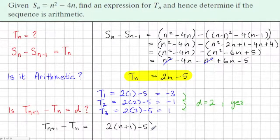So term n plus 1 is 2 times n plus 1 minus 5. And from this we're going to take away term n, which is 2n minus 5. And multiplying this out we have 2n plus 2 minus 5.